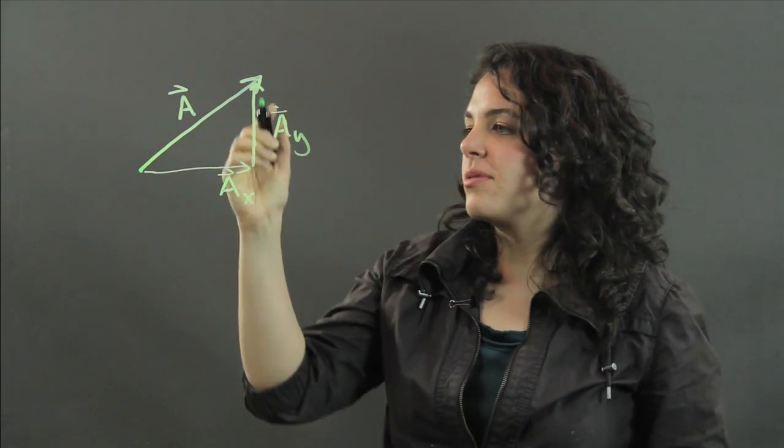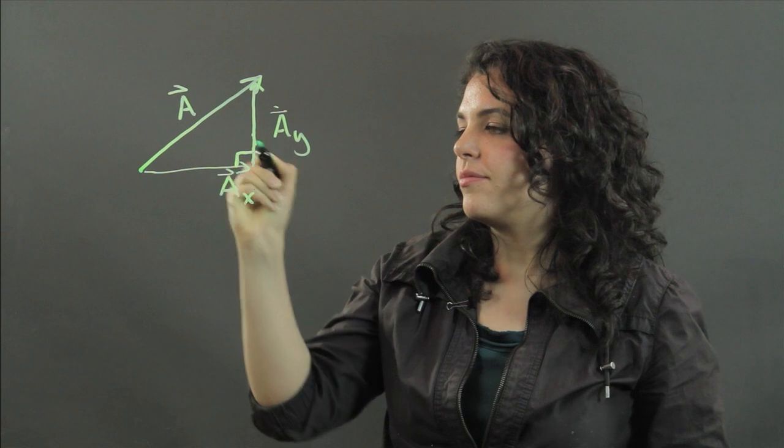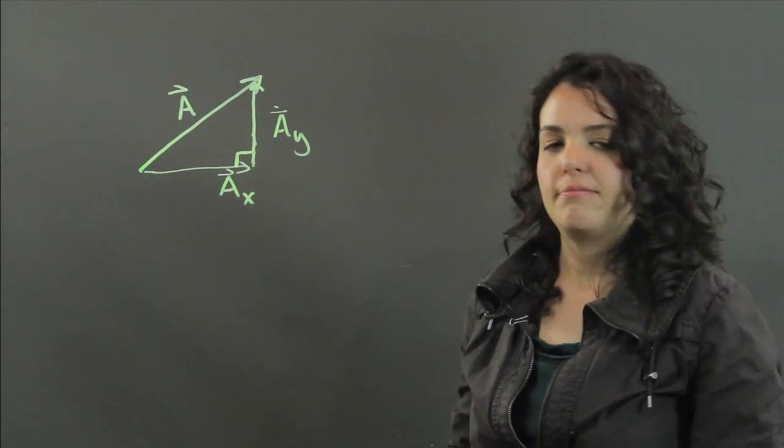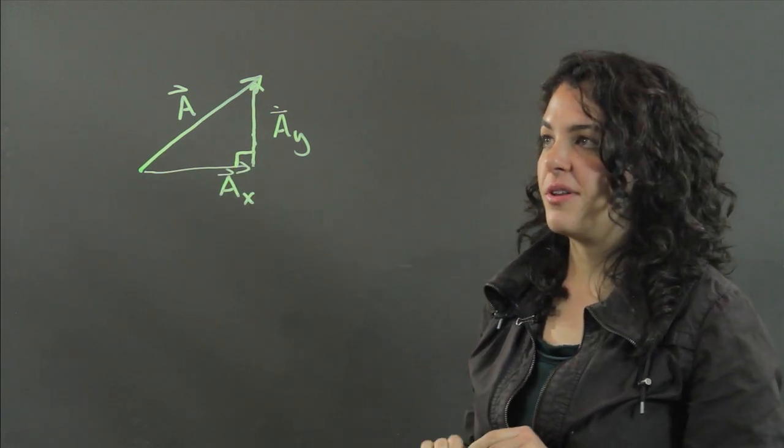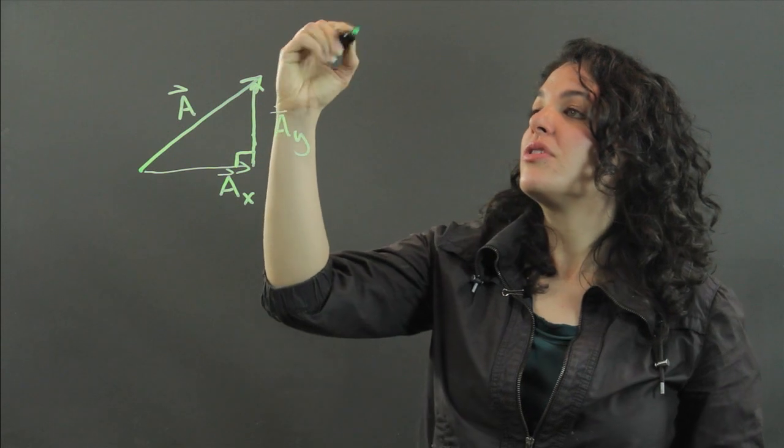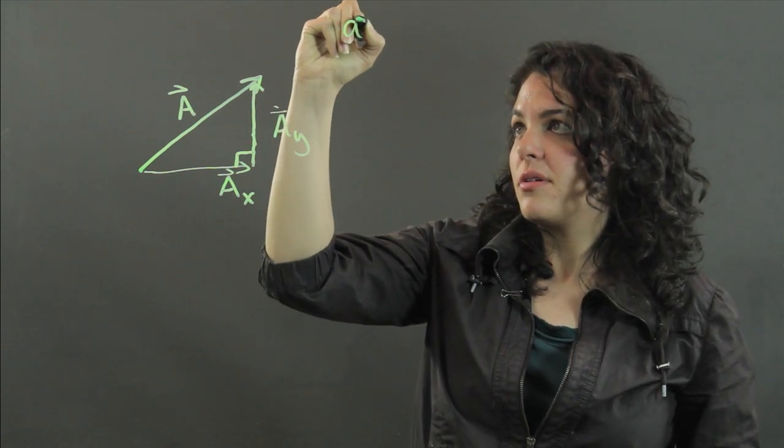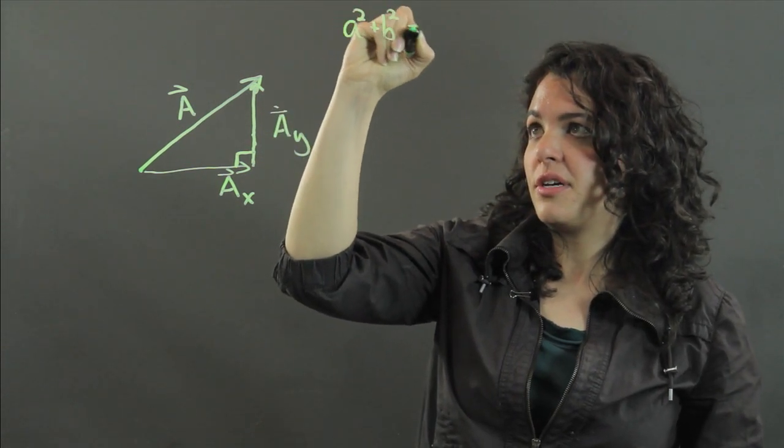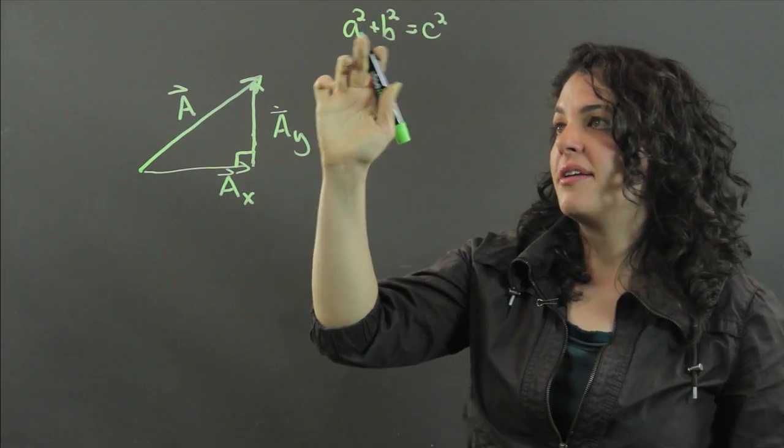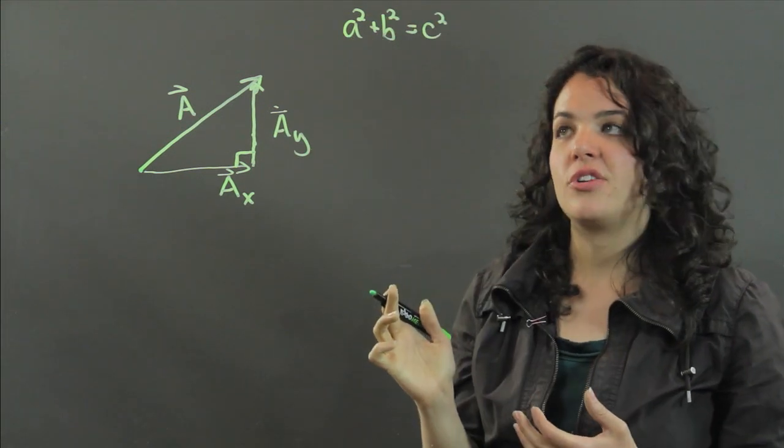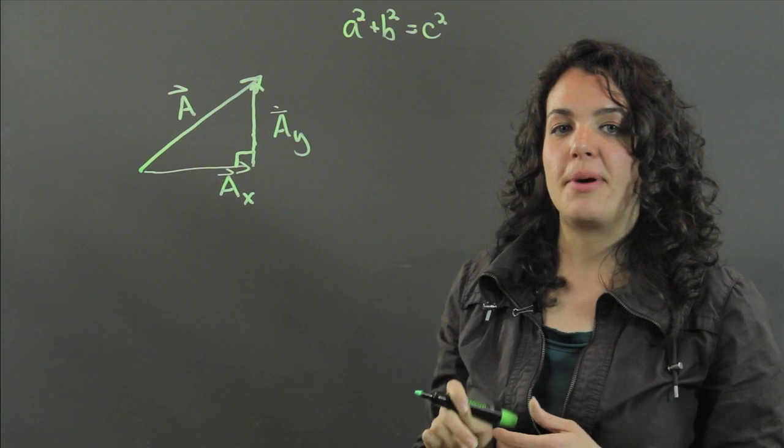Now, notice that this forms a right triangle. And we know the Pythagorean theorem, which is A squared plus B squared equals C squared, A and B being the legs of a right triangle, and C being the hypotenuse.